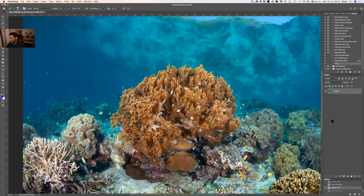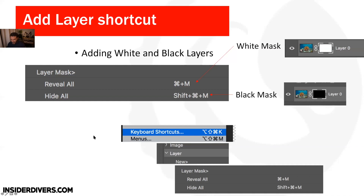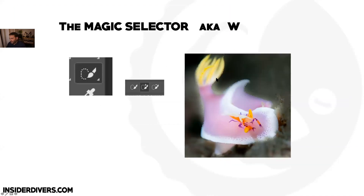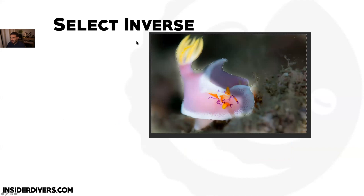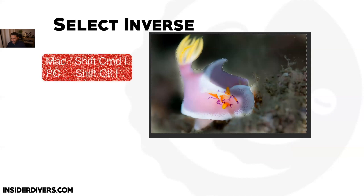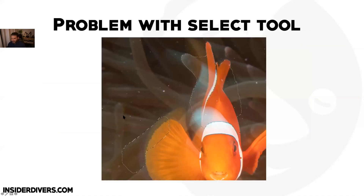You already practiced the magic selector tool which does a good job but doesn't always work. A very useful additional technique is selecting the inverse: select your subject and press Shift+Command+I to select everything outside it, which lets you paint effects on the background without touching the subject. Make sure you remember and actively use these shortcuts.